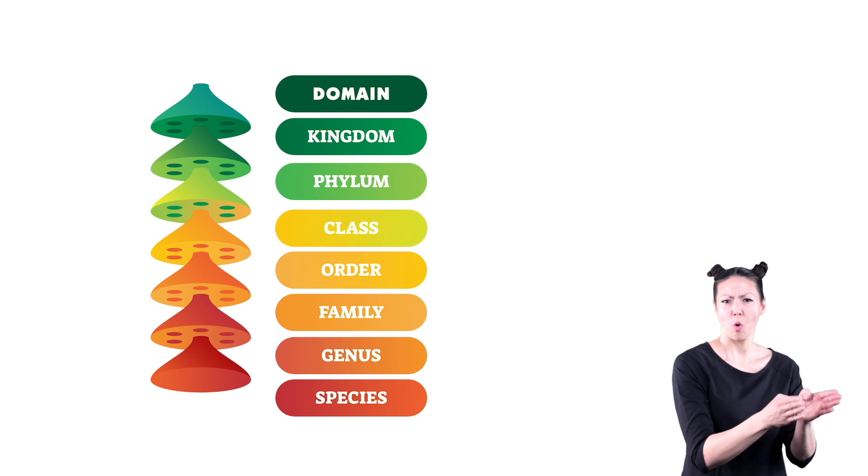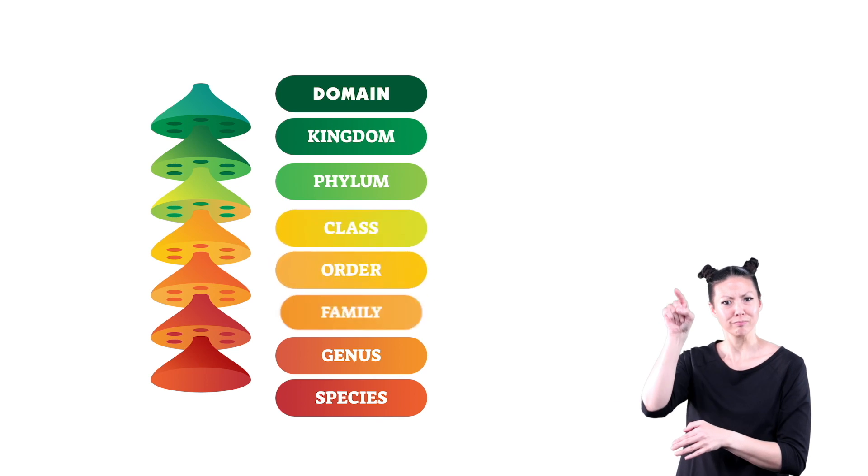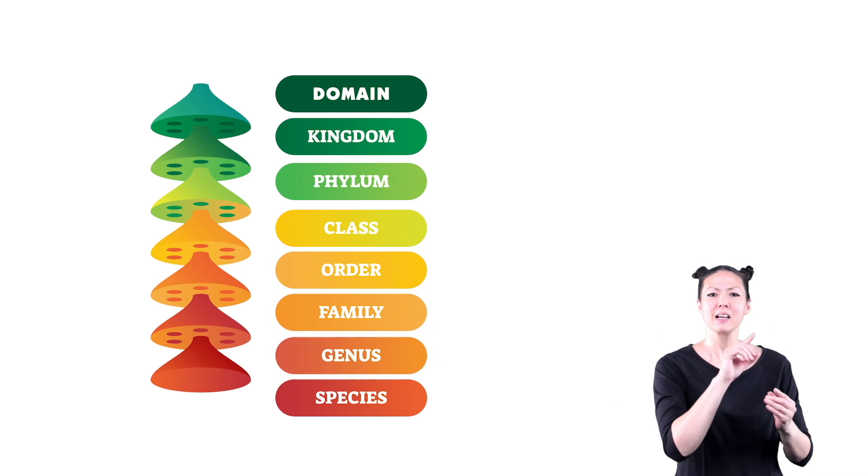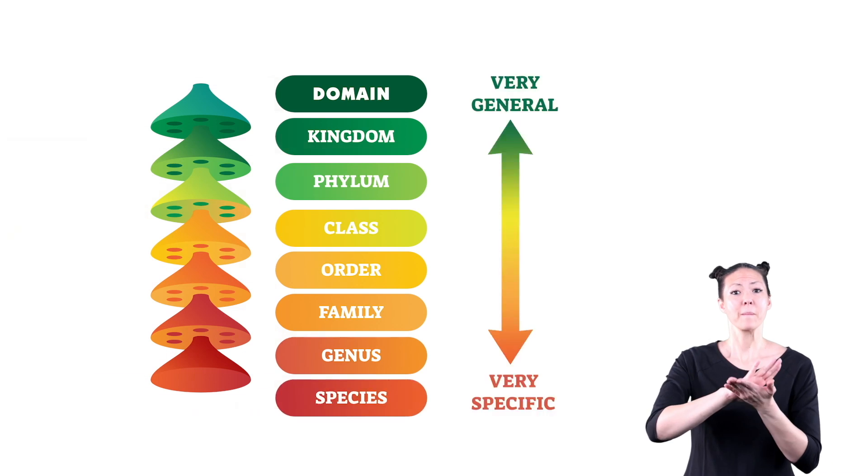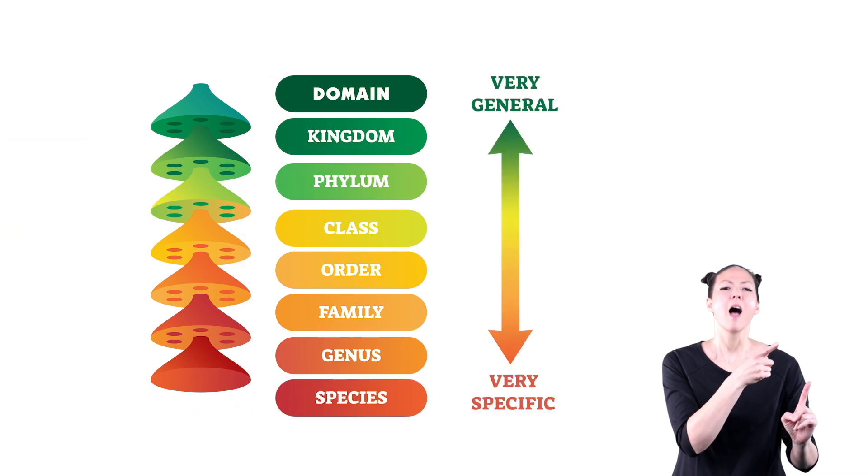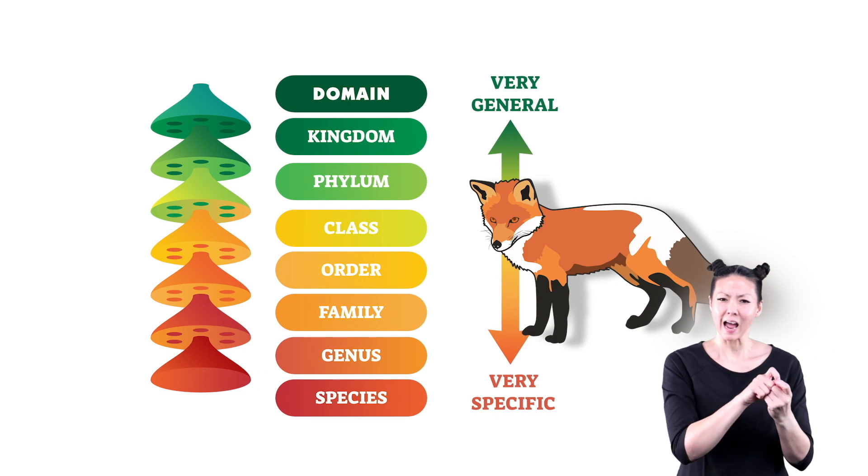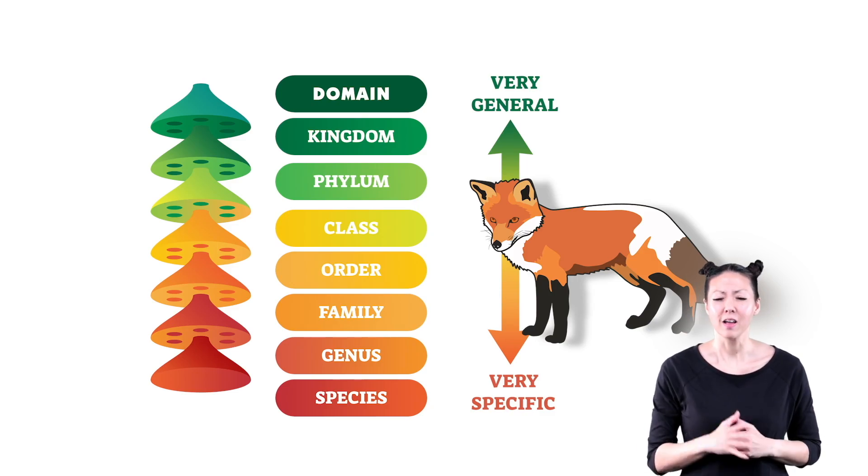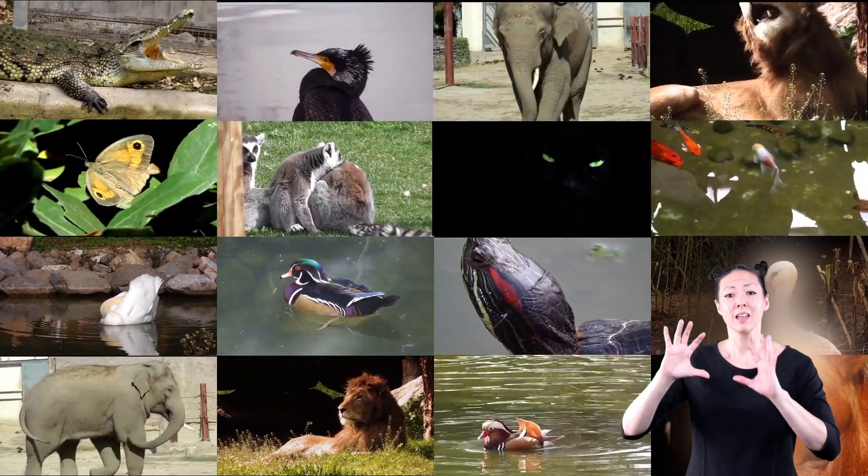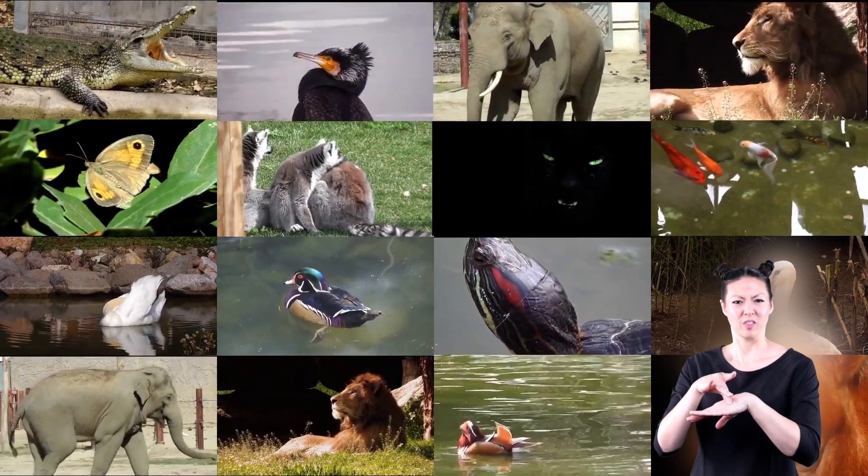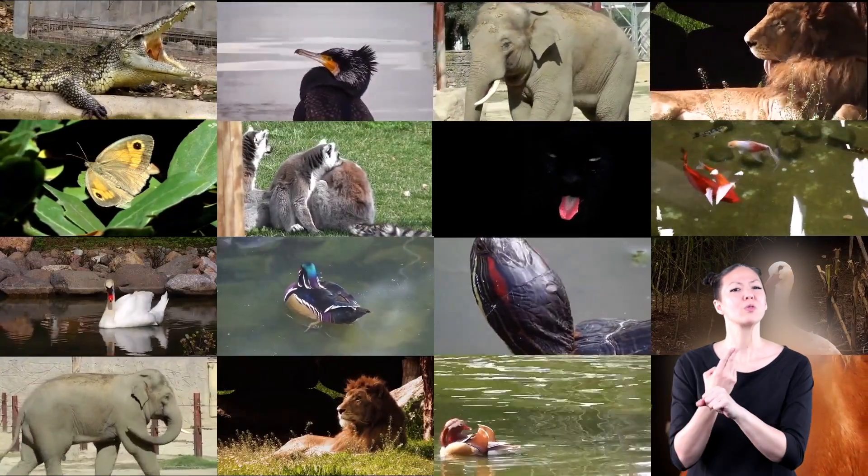Each level after class—order, family, genus, and species—becomes even more specific until you finally find the exact animal you're looking for. As you might imagine, classifying all the animals on Earth is a big job, but using a classification system makes that job a whole lot easier.